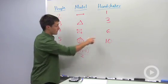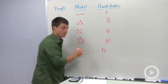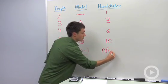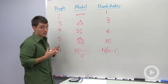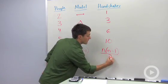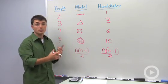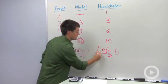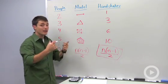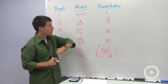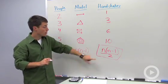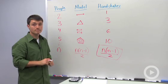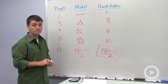So the number of handshakes at a party is the number of people times the number of people minus one, because you're taking yourself out of that equation, and you're going to divide it by two because you don't want to double count every handshake. So that's our formula for the number of handshakes with n number of people.